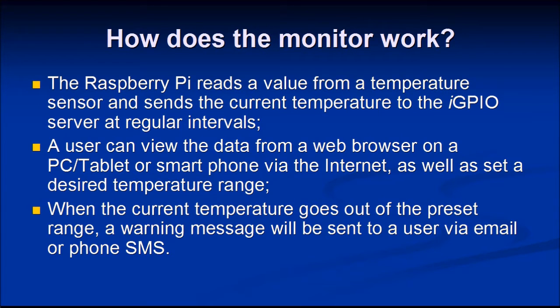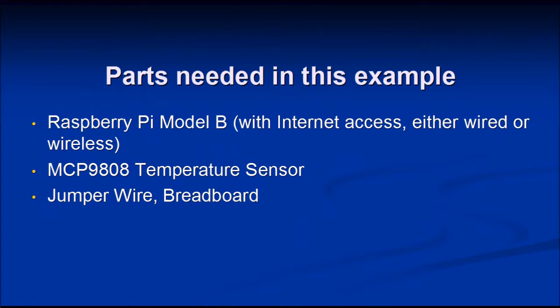A user can view the data from a web browser on a PC, tablet, or smartphone via the internet. They can also set a desired temperature range, and when the current temperature goes outside the preset range, a warning message will be sent via email or SMS.